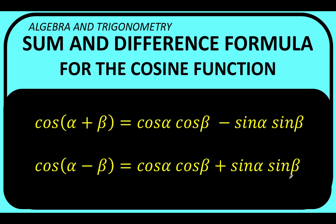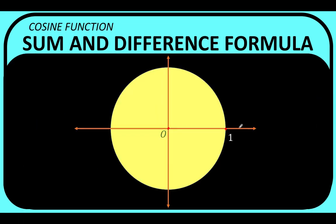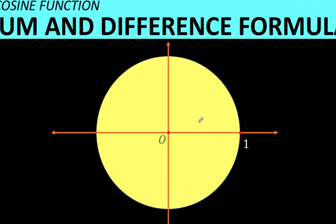Our problem for today is to derive the sum and difference formula for the cosine function. These are the two identities that we are going to derive. Let's begin the derivation now using the unit circle.